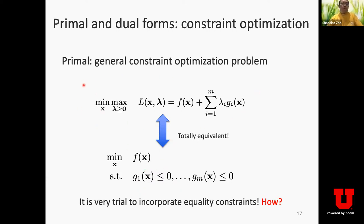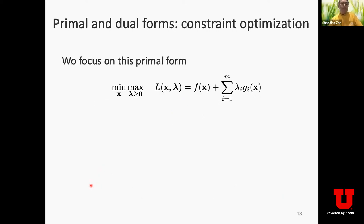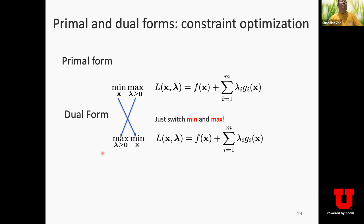We call this minimax problem the primal problem, because it is directly equal to the original constraint optimization problem. If we switch the order of min and max, using the same Lagrange function, we get the dual form: in the inner level we minimize the Lagrange function with respect to x, and in the outer level we maximize with respect to non-negative Lagrange multipliers. The only difference between primal and dual forms is the order of min and max — primal is min-max, dual is max-min.